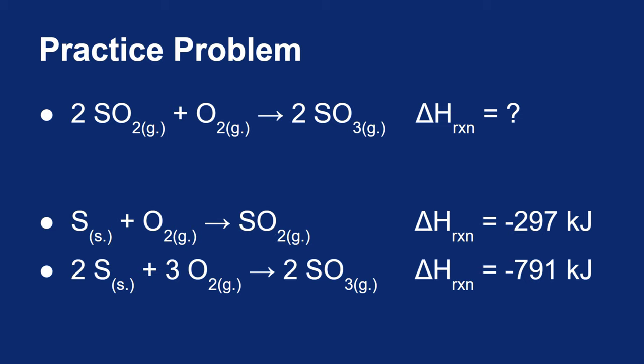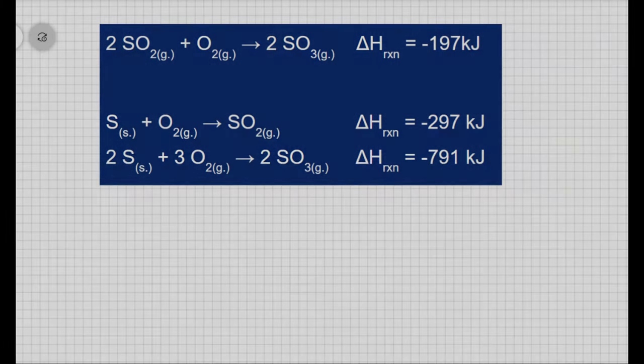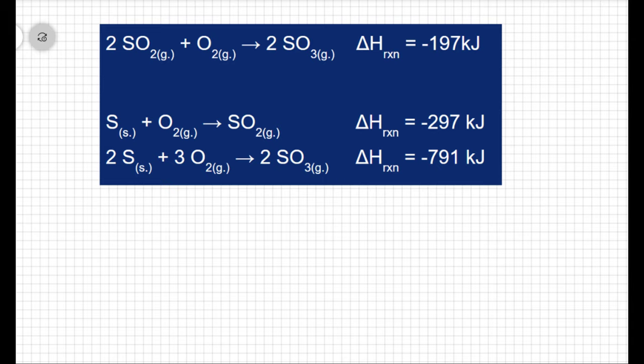I want to use those two pieces of information to find the ΔH for the overall reaction. Hess's law tells us that if a reaction occurs in more than one step, you can add up the enthalpy changes of the individual steps to get the overall enthalpy change of the reaction. So all we have to do is add up the enthalpy changes of the steps — but there's a problem.